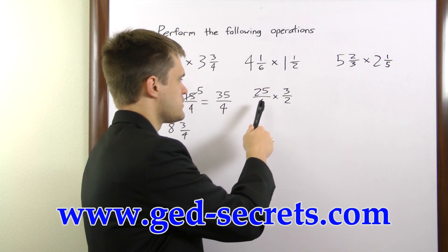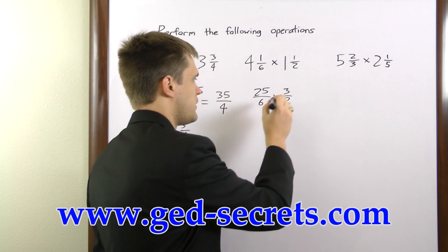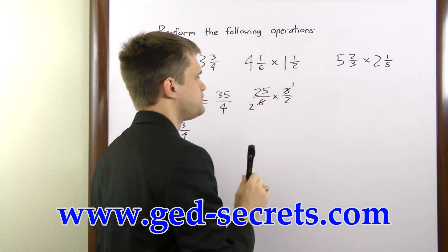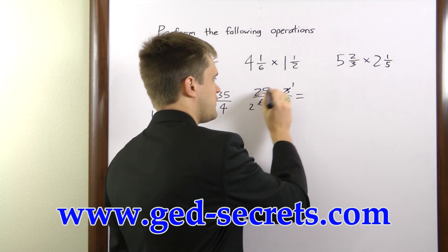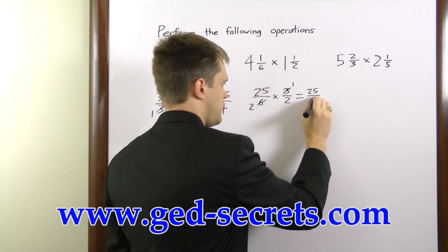Now, once again, we can cancel here. 6 and 3 are both divisible by 3. We'll divide 3 by 3 and get 1, and 6 by 3 and get 2. So then we can multiply. 25 times 1 is 25. 2 times 2 is 4.